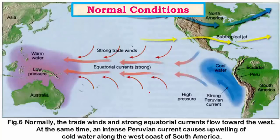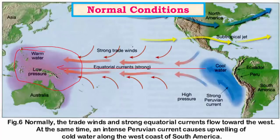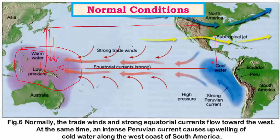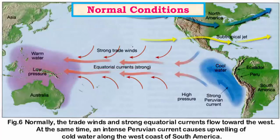Under normal conditions we have strong Walker circulation, with piling up of warm waters on the western Pacific. This region is associated with intense low pressure, creating good rainfall through upliftment. The complete cell is associated with subsidence on the eastern side, creating high pressure and divergence. The volume created by the westward movement of water causes upwelling of cold waters near South America, which is associated with rich fishing grounds.